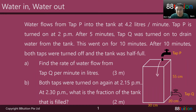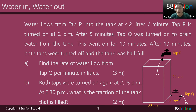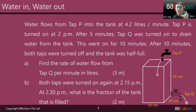Tap P is turned on at 2PM. After 5 minutes, tap Q was then turned on. This means that tap P is turned on solely for 5 minutes, and after that, tap Q was turned on to drain the water from the tank. And that went on for 10 minutes. In this 10 minutes, tap P is still on. So in total, tap P is turned on for 5 plus 10, which is 15 minutes. Tap Q is only turned on for 10 minutes. After 10 minutes, both taps were turned off, and the tank was half full.